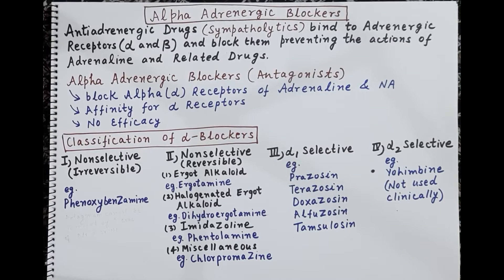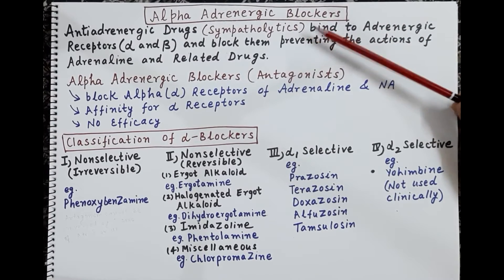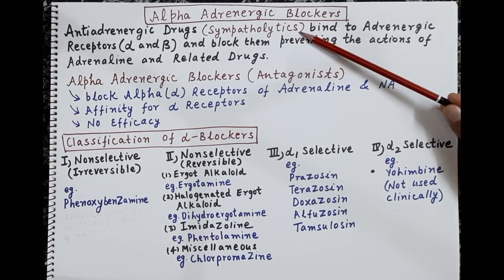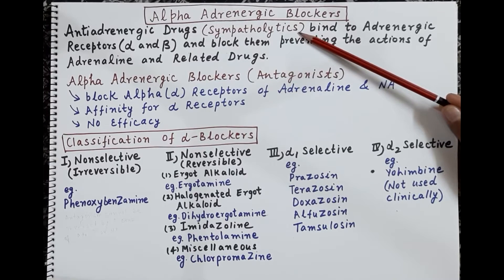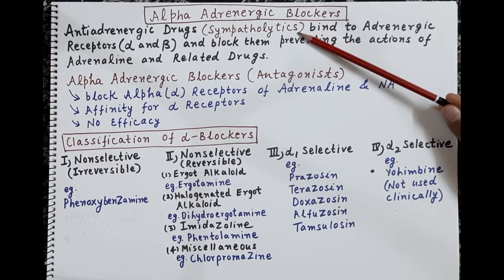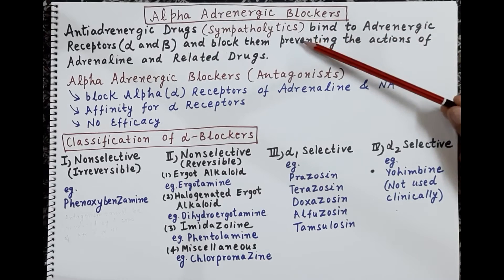In today's session, we are going to talk about sympatholytics. Sympatholytics are the anti-adrenergic drugs, and these are the drugs that bind to alpha and/or beta receptors and antagonize or prevent the action of adrenaline, noradrenaline, and other related adrenergic drugs. In simple words, sympatholytic drugs are those drugs that prevent the action of adrenaline and/or other adrenergic drugs.